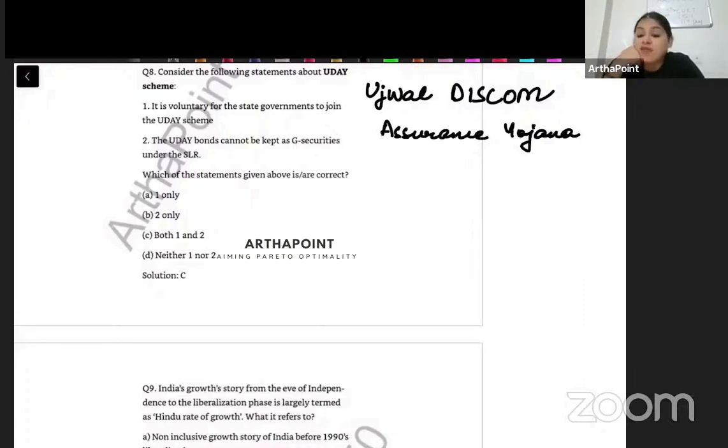Ujwal Discom Assurance Yojana. Year 2015, it was launched by Ministry of Power and New and Renewable Energy. And its aim was to financially turn around the Discoms. A very important question: what is a Discom? Most of you may not know what is a Discom. So if you will Google this Discom, there will be a lot of different definitions for Discom.